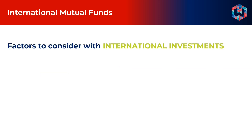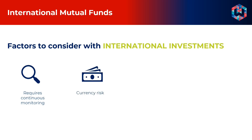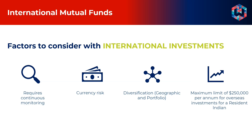Another interesting space is international mutual funds. There are several factors to consider with international investments. The first is that it requires continuous monitoring on both the domestic and international level. There is currency risk involved because you are investing in INR into another geography or currency, and you might need the money back in INR or in the currency you are investing in. You also benefit from geographic diversification at the portfolio level. For example, the LRS scheme allows for a maximum of 250,000 US dollars per resident to be invested each year abroad.